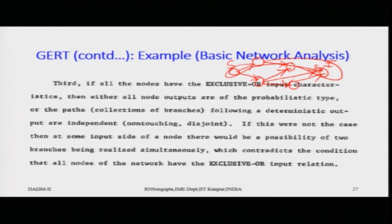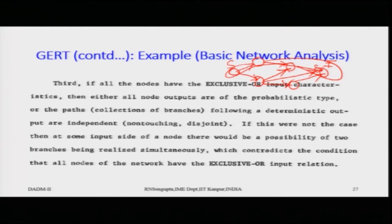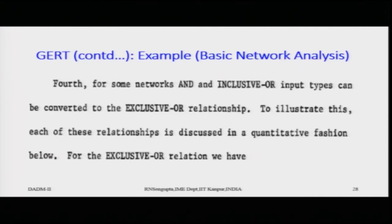If paths are not mutually exclusive and exhaustive, there is a possibility of two branches being realized simultaneously, making it difficult to determine which path is taken without a probability of splittage — the probability that path one or path two is taken. Fourth case: for some networks, inclusive OR input types can be converted into exclusive OR relationships.